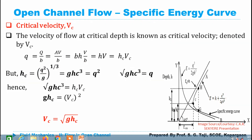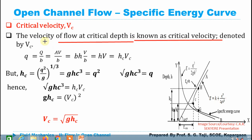Critical velocity is the velocity of flow which occurs at the critical depth. If the depth of flow in the channel equals the critical depth, then the corresponding velocity is known as critical velocity, represented by Vc. To derive the equation for Vc: we know q = Q/B, and since Q = Area × velocity = B×H×V, the B cancels, giving q = H×V. At critical conditions this becomes q = Hc × Vc.